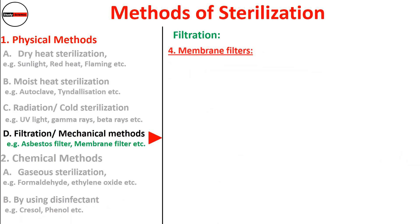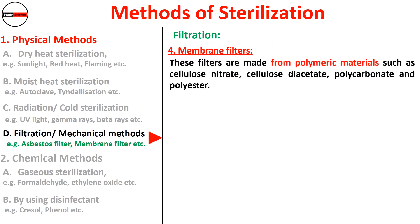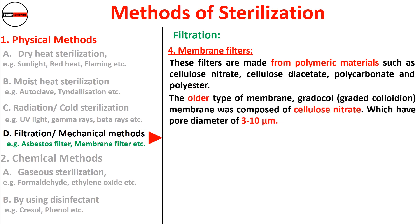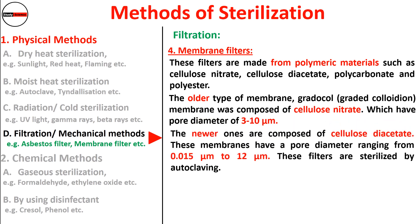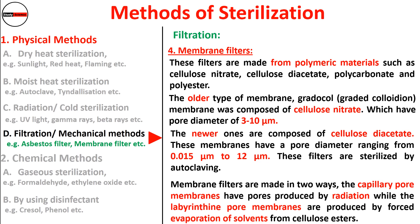Membrane filters are made from polymeric materials such as cellulose nitrate, cellulose diacetate, polycarbonate, and polyester. The older type, called gradocol (graded collodion membrane), was composed of cellulose nitrate with pore diameters of 3–10 micrometers. Newer ones are composed of cellulose diacetate with pore diameters ranging from 0.015 to 12 micrometers; they are sterilized by autoclaving. Membrane filters are made in two ways: capillary pore membranes have pores produced by radiation, while labyrinthine pore membranes are produced by forced evaporation of solvents from cellulose.